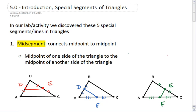We see that we have three midsegments in a triangle: DE, DF, and EF. And in all of these, the midsegment connects the midpoint of one side to the midpoint of a second side.